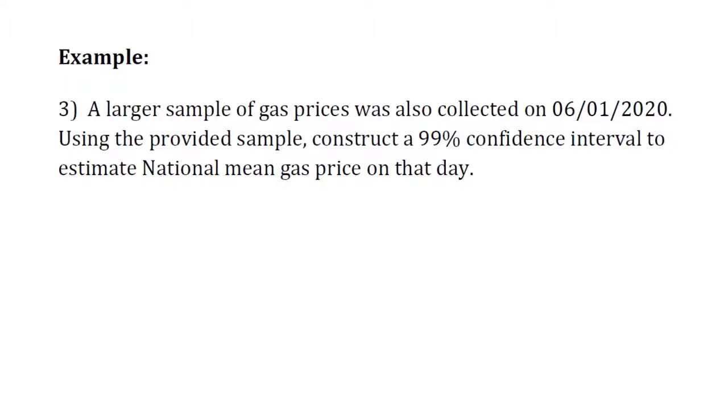All right, let's now come to our third problem, example three, to give viewers more opportunity to see the steps and follow along with the highlighted steps in finding confidence intervals to estimate a population mean value. Let's read the wording description of example three. It says a larger sample of gas prices was also collected on June 1st, 2020. Let me show that larger sample, and just treat this as a different sample that happens to be larger than the one we already used for our first two examples.